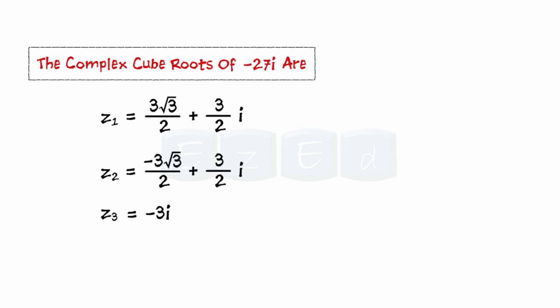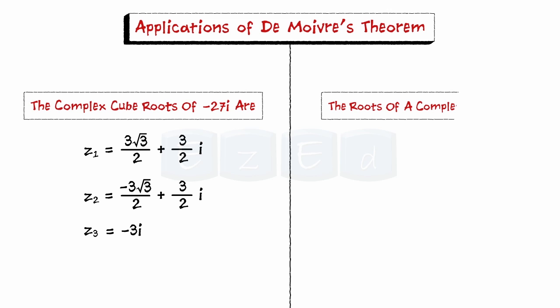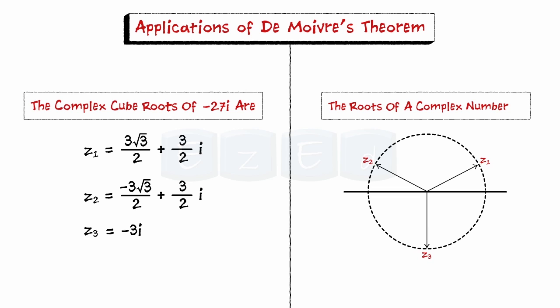Let us now graph these roots in a complex plane. The roots of a complex number are cyclical in nature — when the points are plotted on a polar or complex plane, the points are evenly spaced around the origin.